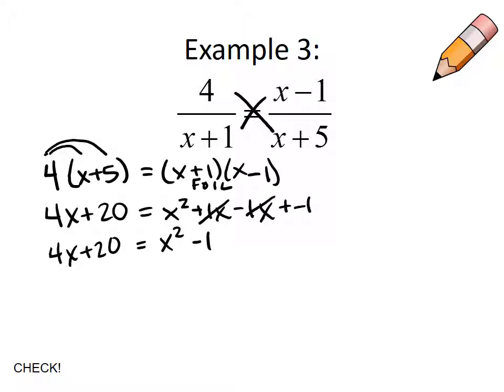Now if I want to move everything to one side, it doesn't matter which side, but I want to keep the x squared where it is, so I'm going to subtract the 4x and subtract the 20. If you would prefer to do these in individual steps, please do so. I'm going to subtract 4x and subtract a 20.